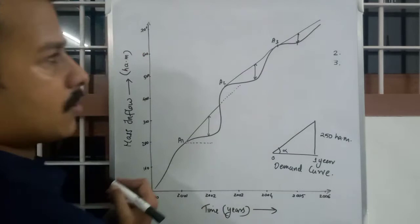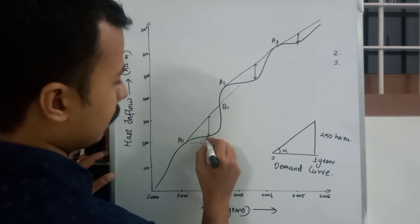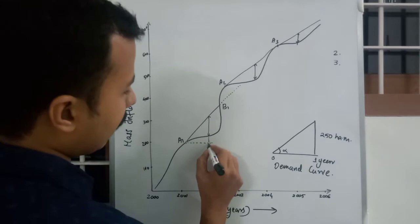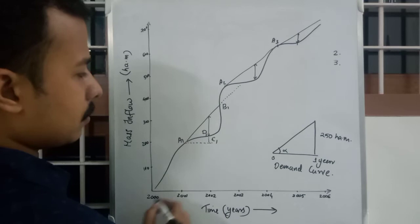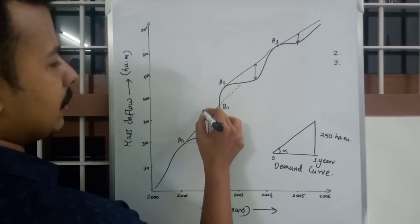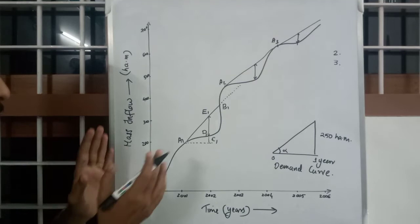The maximum vertical intercept is somewhere here. We name these points accordingly: this point is b1, and extending downward this maximum, the coinciding point is c1, the next point is d1, and the point on the demand curve is e1. So we have points a1, c1, d1, and e1.